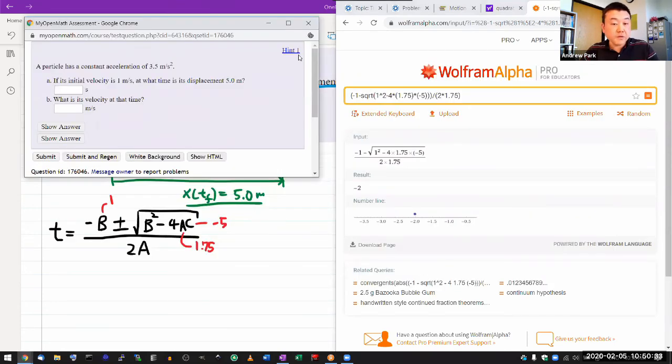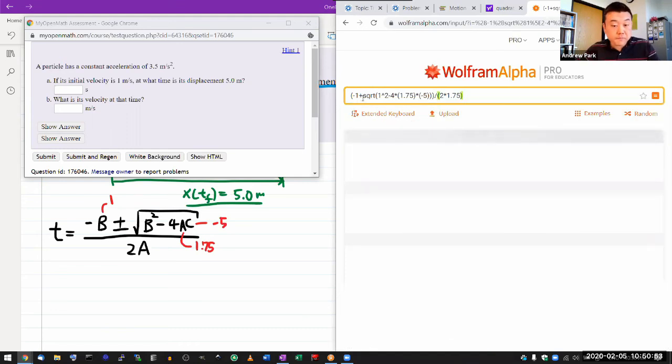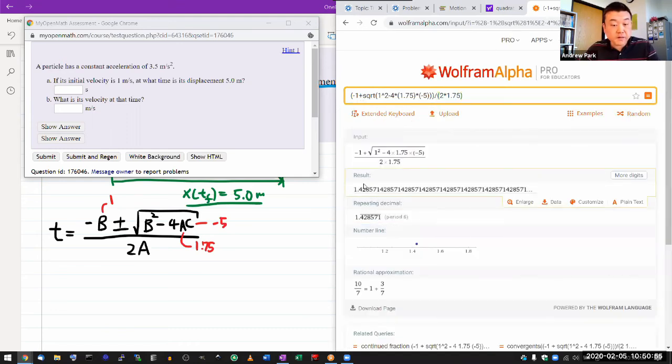And this is what the hint was getting at, that you will come up with two possible times. And what it means by physical grounds is what does this minus time mean? Well, it's time that didn't actually exist in your actual physical setup. In your actual physical setup, it starts out with T equals zero. So only the positive time here is meaningful. That's why when you look at the answer, it gives you the positive time.